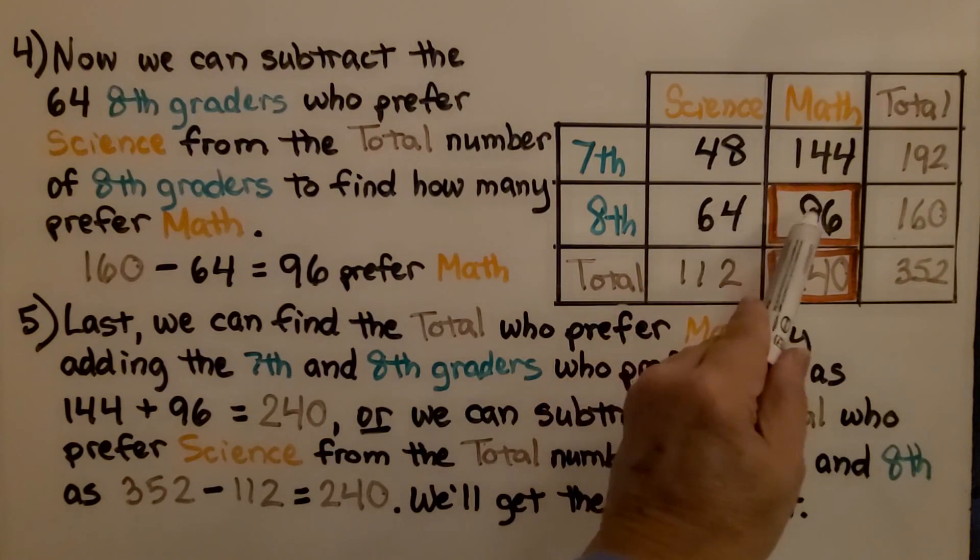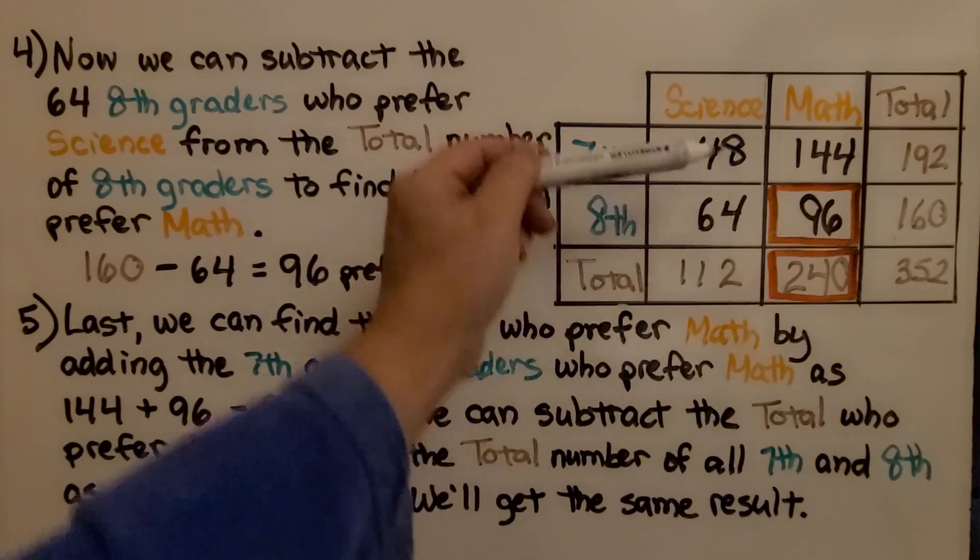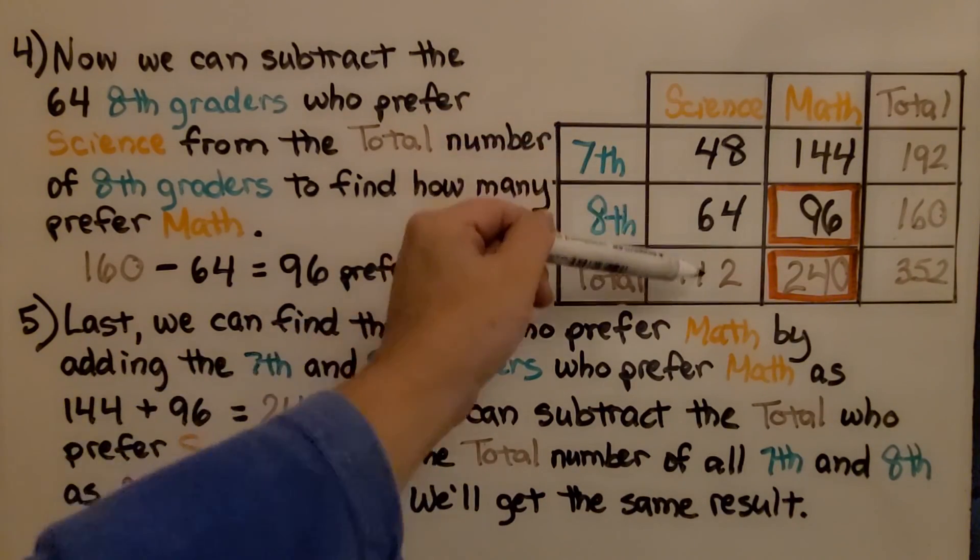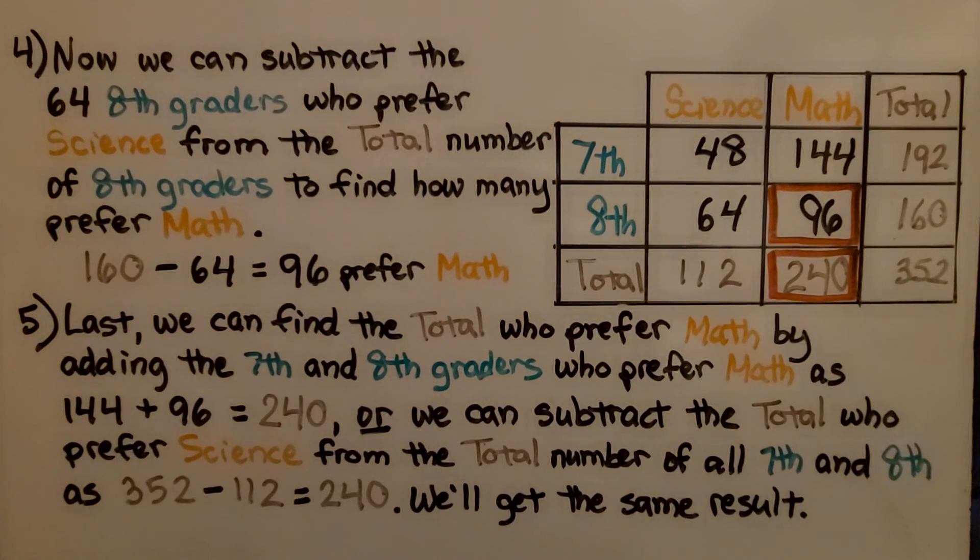That this cell plus this cell is equal to this cell. This cell plus this cell is equal to this cell. And when you add these two together, it equals this total. And when you add these two together, it equals that total. Then you'll know you did it correctly.